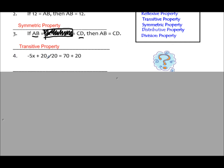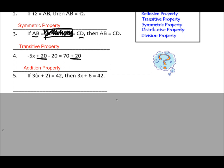Number 4: if you look carefully, we have negative 5x plus 20 minus 20, and we have 70 plus 20. They're both showing plus 20 on each side of the equation. So because we've added 20 to both sides of the equation, this is the addition property.